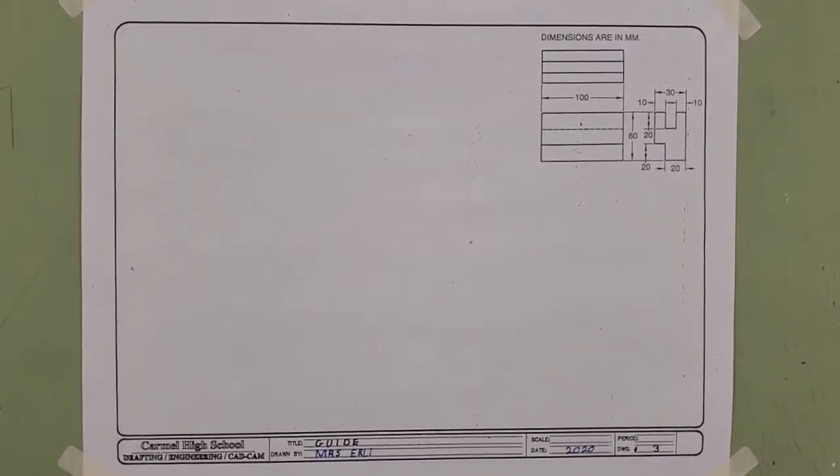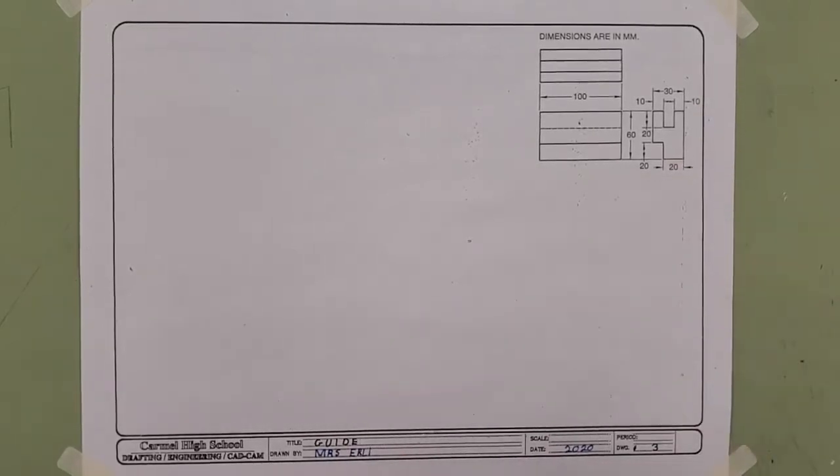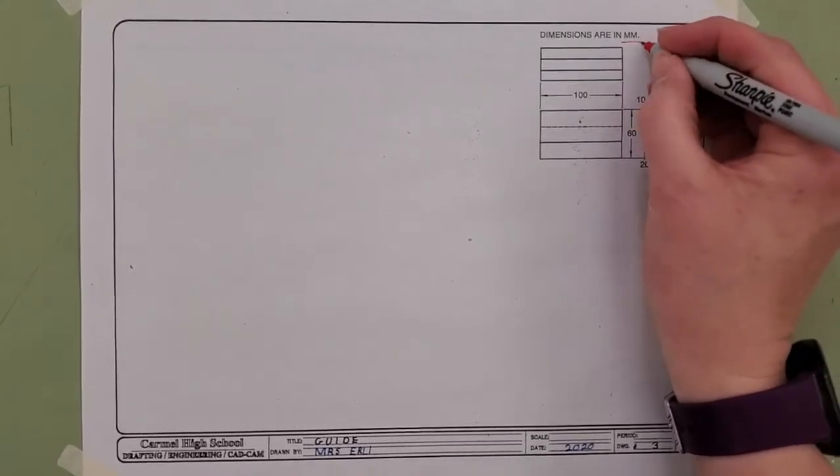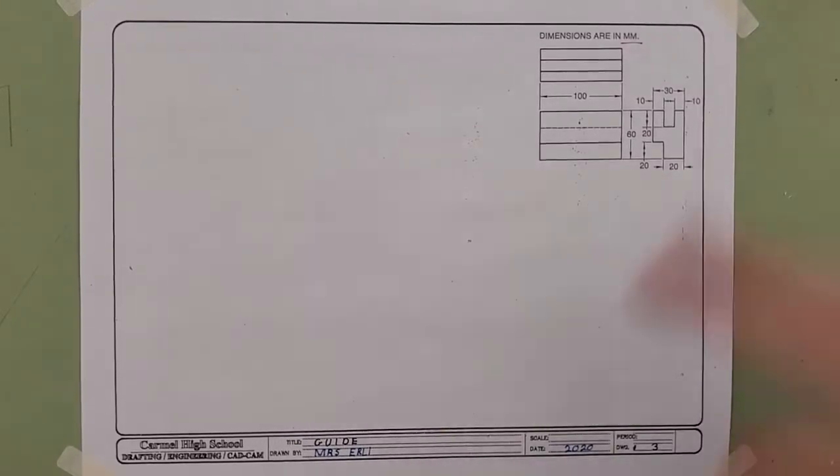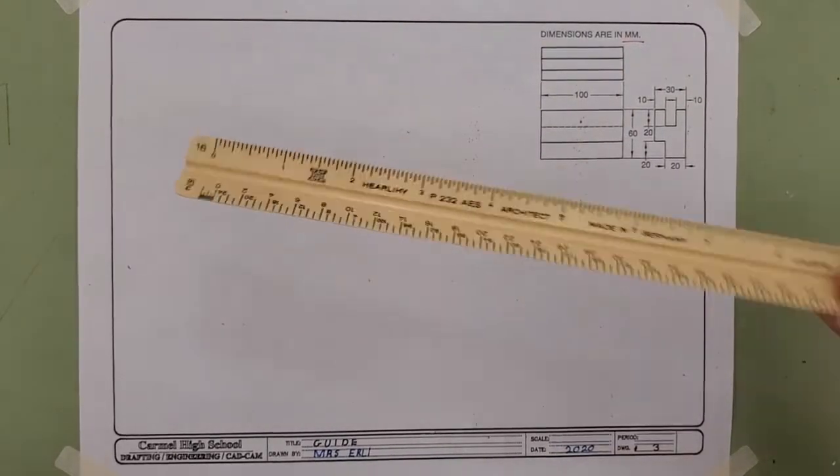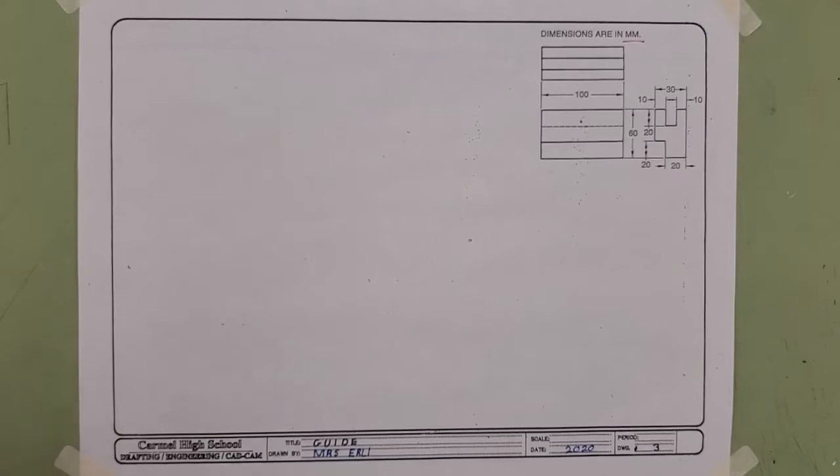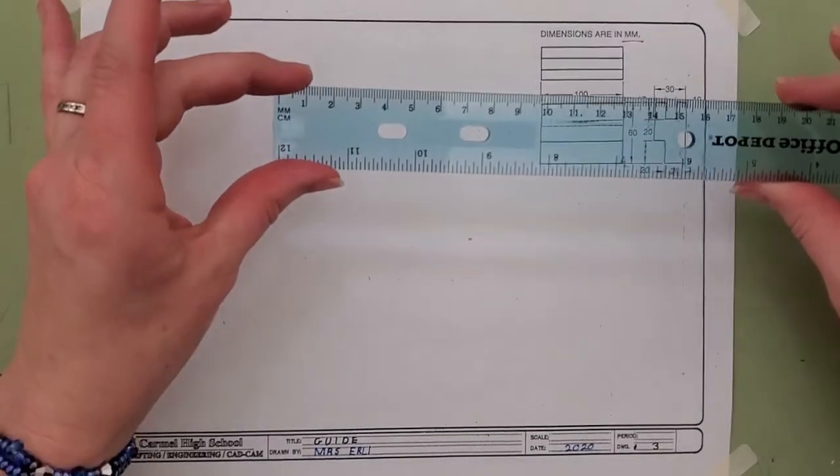A couple of very interesting things about this particular orthographic is that I'm noticing that the dimensions are in millimeters. So we're not going to be able to use our regular architecture scale, so I'm going to set that off to the side and I'm going to grab out my regular ruler.